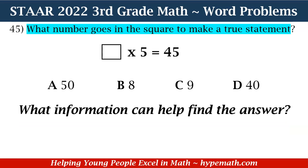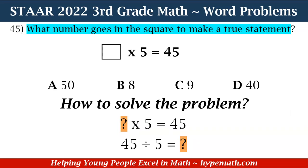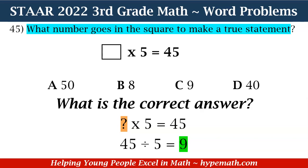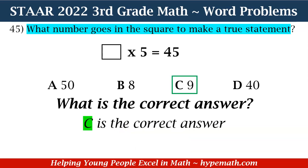What information can help find the answer? We have a square times 5 equals 45. Because we don't know what times 5 equals 45, what we could do to find the number is the opposite operation — 45 divided by 5 equals 9. So the correct answer is C, since C has a value of 9.